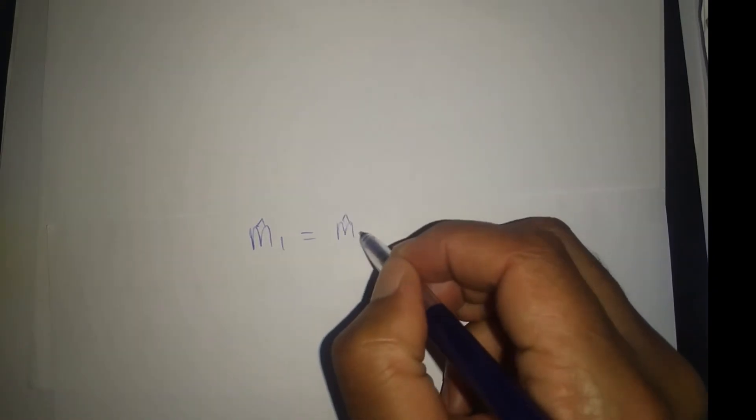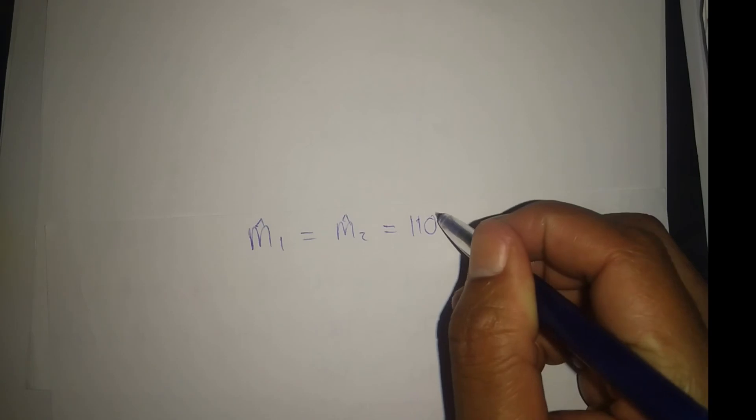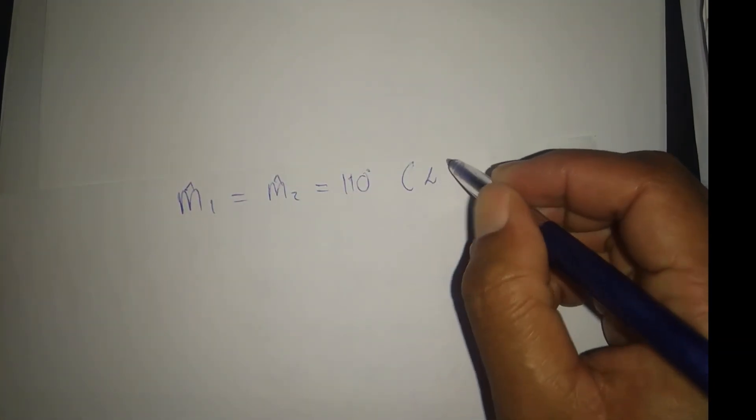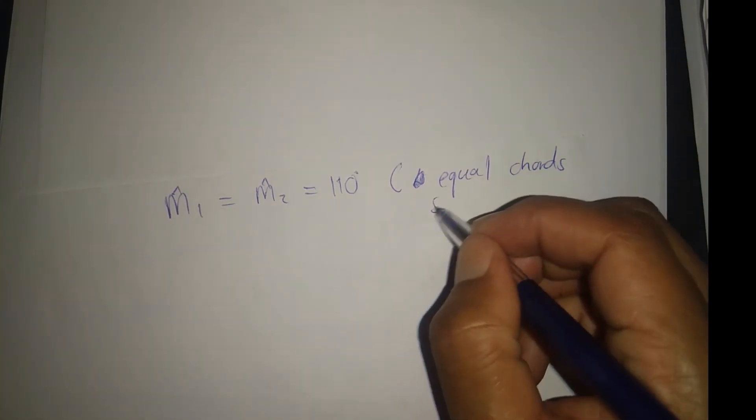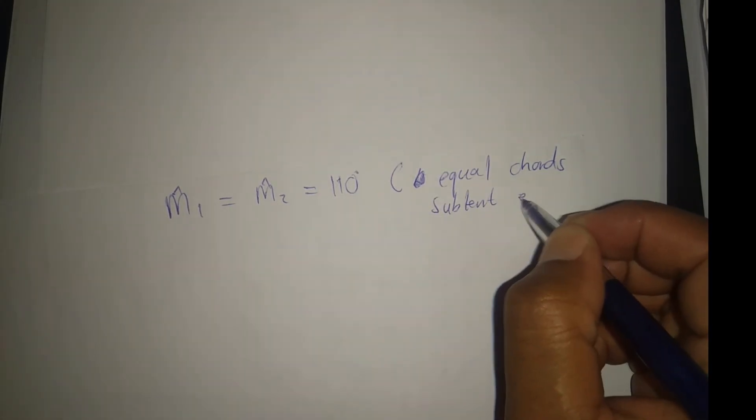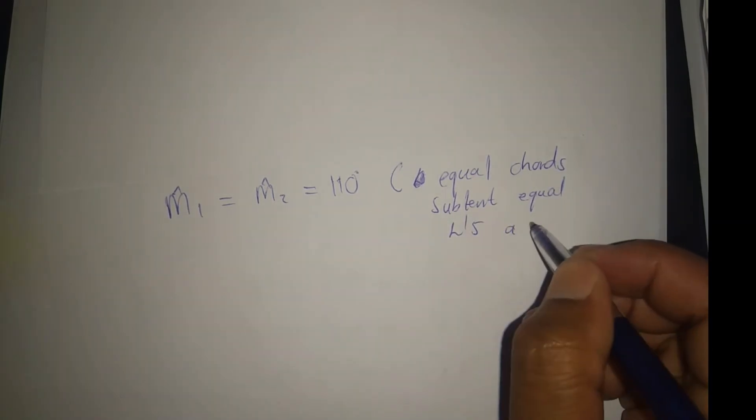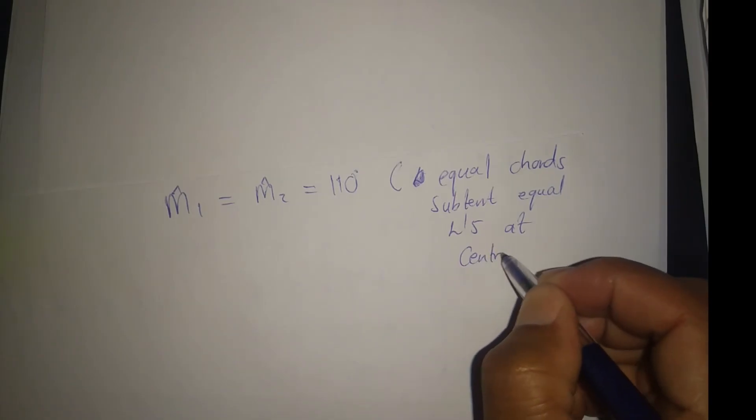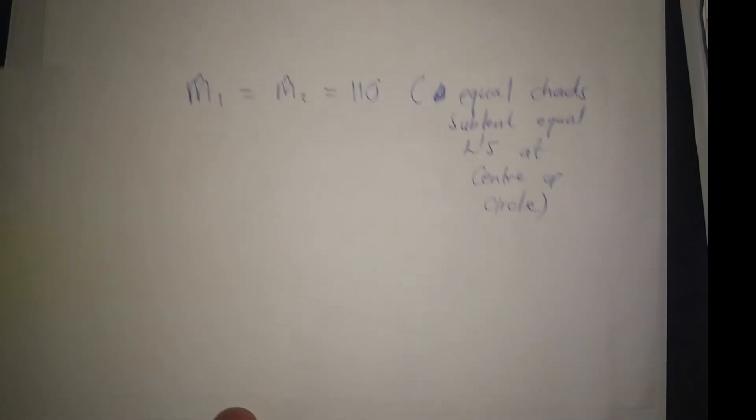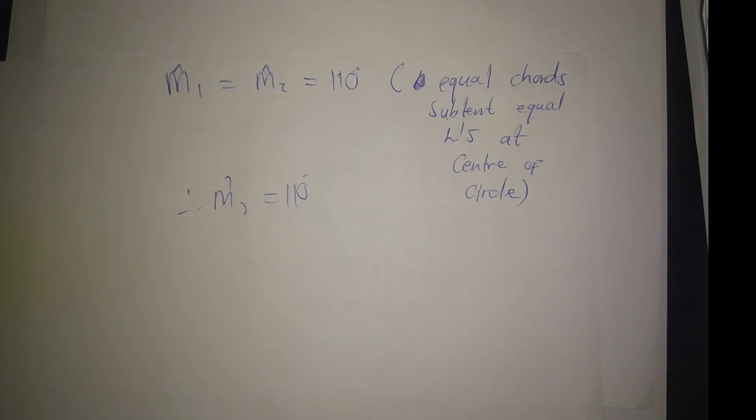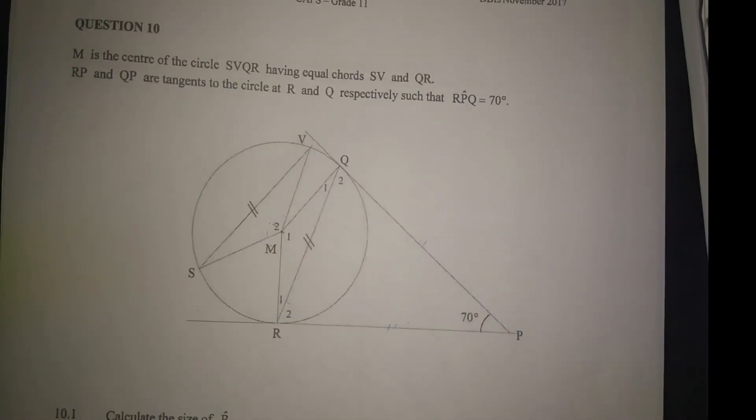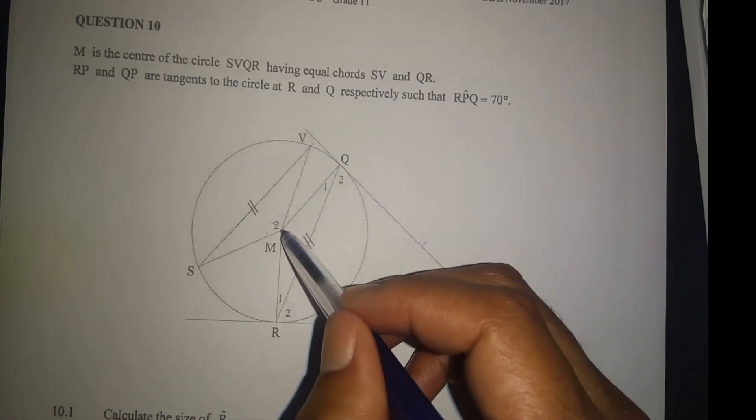So M1 is equal to 110, but M1 is equal to M2, which is equal to 110. Why? Because equal chords subtend equal angles at the center of the circle.